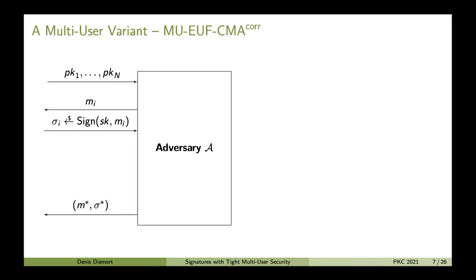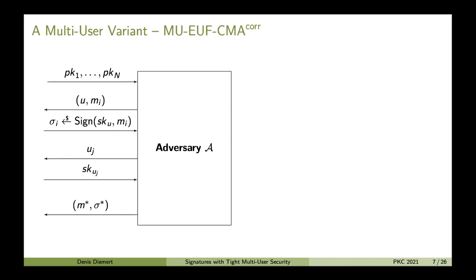On the slide you again see the single-user experiment. To transform this into a multi-user experiment, instead of only a single public key, we have N many public keys — that means we have N many users in our experiment. Now that we have many public keys, we also need N many secret keys. The adversary needs to tell the experiment for which of the users it wants to see a signature, done by adding a parameter u which says: I want to see the signature of message mi under secret key sku. Another thing that becomes interesting in a multi-user setting is adaptive corruptions — the adversary gets the opportunity to query for secret keys of a subset of these users.